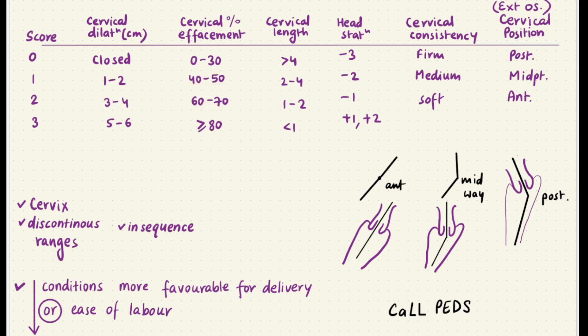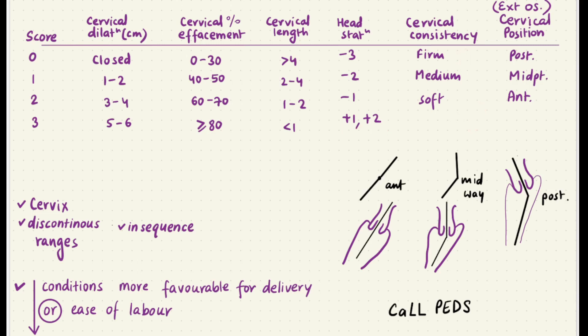Cervical length: four centimeters — think of two twos are four, and two ones are two, then less than one. Head station is again in sequence: minus three, minus two, minus one, and plus one, plus two. Cervical consistency — the softer it is, the better. That's it for Bishop's Score.